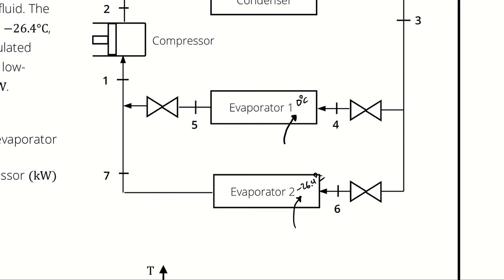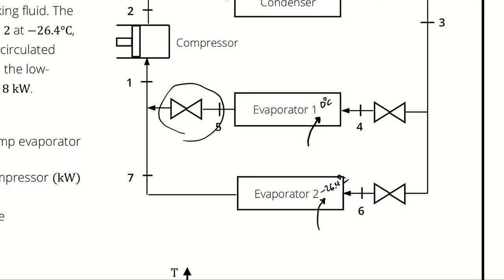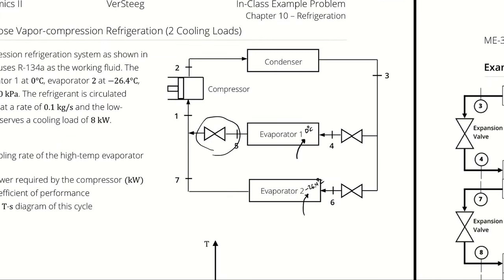Evaporator 2 will be the low pressure evaporator because it operates at the saturation pressure corresponding to negative 26.4 degrees Celsius, which is lower than the saturation pressure corresponding to 0 degrees Celsius. We also know that because of the expansion valve — we are mixing together the streams at the outlets of both evaporators and they have to be at the same pressure. Because we need an expansion valve before mixing them together, that implies evaporator 1 is at a higher pressure. The result of that intermediate pressure is that we have three different operating pressures.